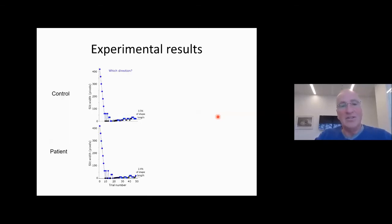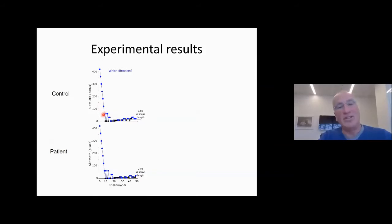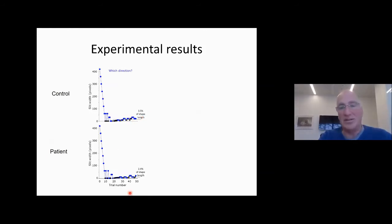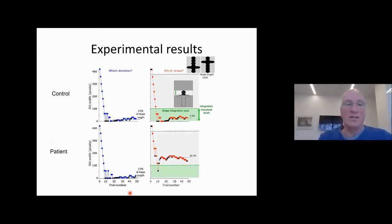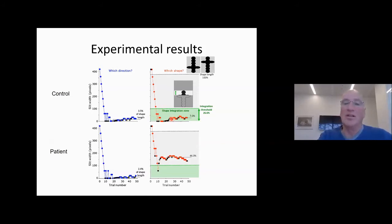Here's the data. We start with a large slit width so you can see the whole image, and using a staircase we decrease the size of the slit width with every correct answer, assessing the threshold using the last reversal. Here's the data for the control and the patient — both do very well on motion direction. But when you look at the same subjects for shape recognition, you find that the control is doing much better — its threshold is only 7% of the total object, while for the patient it's 44%.